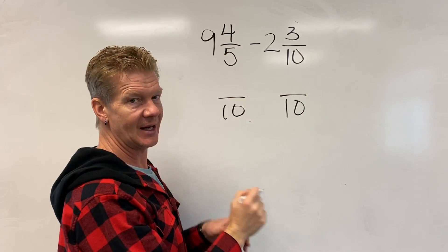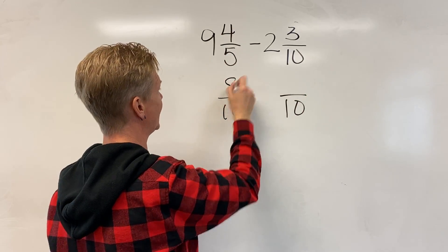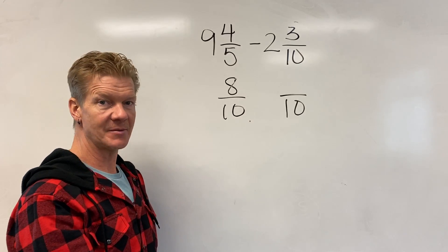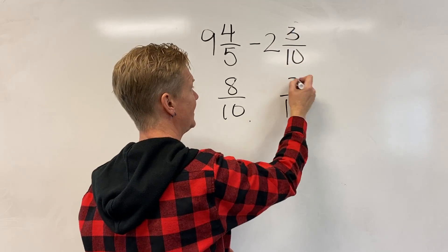How did I go from 5 to 10? I times by 2, so 4 times 2 is 8. How did I go from 10 to 10? I times by 1, or I didn't do anything, so I don't do anything to the top.